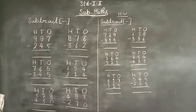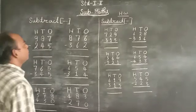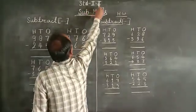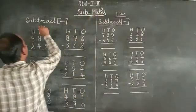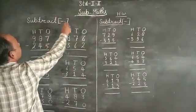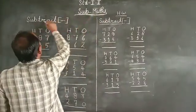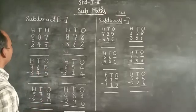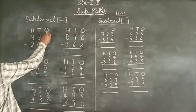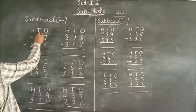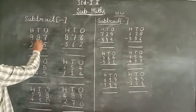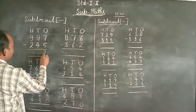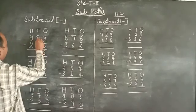Hello children, welcome to online classes for Standard 1st and 2nd. Subject: subtraction without borrowing. First set: 7-5=2, 8-4=4, 9-2=7, 6-2=4, 7-6=1, 8-3=5.